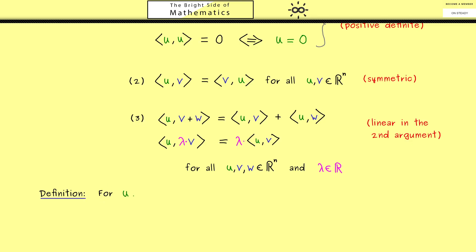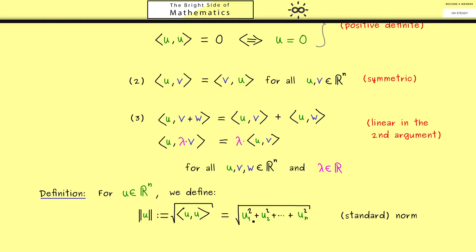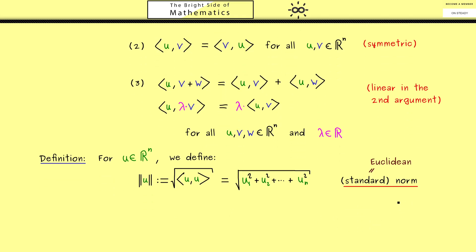We can define a norm for any vector u in Rn. The notation — double lines around u — you already know from part 3. We use the inner product of u with u, which we know is non-negative, and take the square root of this number. This gives us the usual Euclidean length in R2 or R3. In other words, we take the components of u squared, add them together, and take the square root. In R2 you know this formula from the Pythagorean theorem. For a general vector u in Rn we call this the standard norm, sometimes also called the Euclidean norm. A norm is used to measure length.